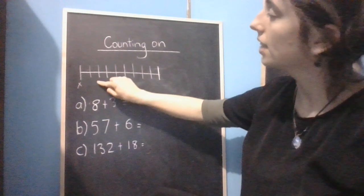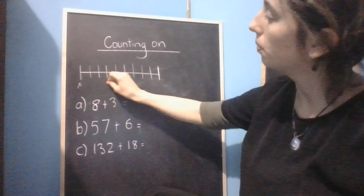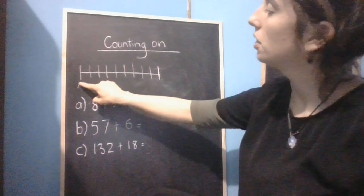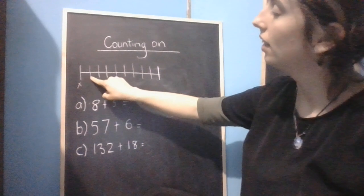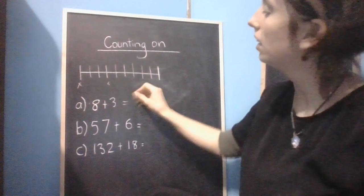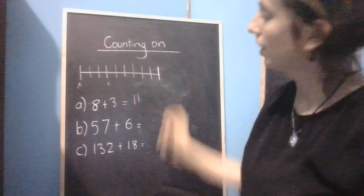First jump, second jump, third jump, and that's where we end up. So 8 plus 3: 8, 9, 10, 11. So 8 plus 3 would be 11.